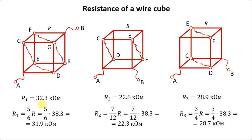What is the conclusion? The measured value of the cube resistance between two points on the space diagonal is 32.3 kΩ, while the calculated one is 31.9 kΩ. As you can see, the results of measurements are in good agreement with our calculations, and this is also true for the other cases — the summary is presented on this slide. The slight difference between measured and calculated values can be explained by small variation in the electrical properties of the resistors used. Thank you for watching and goodbye!